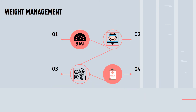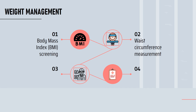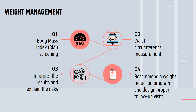Furthermore, weight management program is also available in a community pharmacy. A body mass index BMI screening and a waist circumference measurement will be offered to potential customers. After that, pharmacists will interpret the results and explain the risks involved if one is overweight or obese. Then, pharmacists will recommend a weight reduction program suitable for the customer and design proper follow-up visits to monitor the customer's progress.